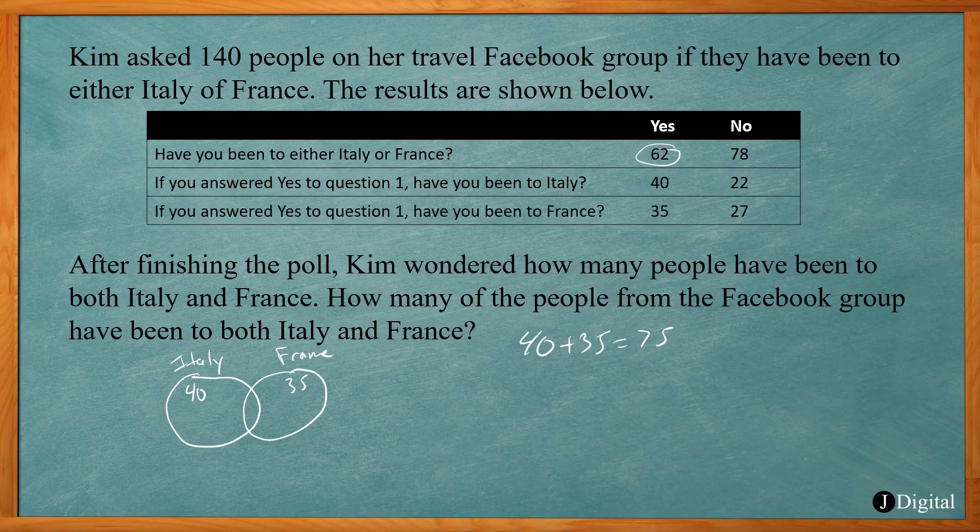So that means that some of them overlap. Some of them have been to both. So how many in the middle would make this work out? The difference here, 75 and 62, is 13. So it's 13 over. That means 13 went to both.